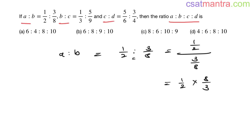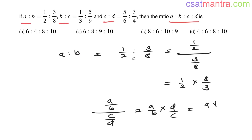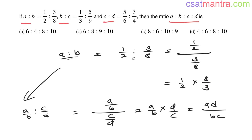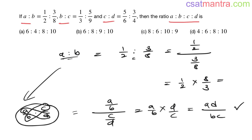We have learned this in the concepts: if (a/b) divided by (c/d), it becomes a/b multiplied by d/c — this is basically ad over bc. So a/b : c/d can be written as ad : bc.